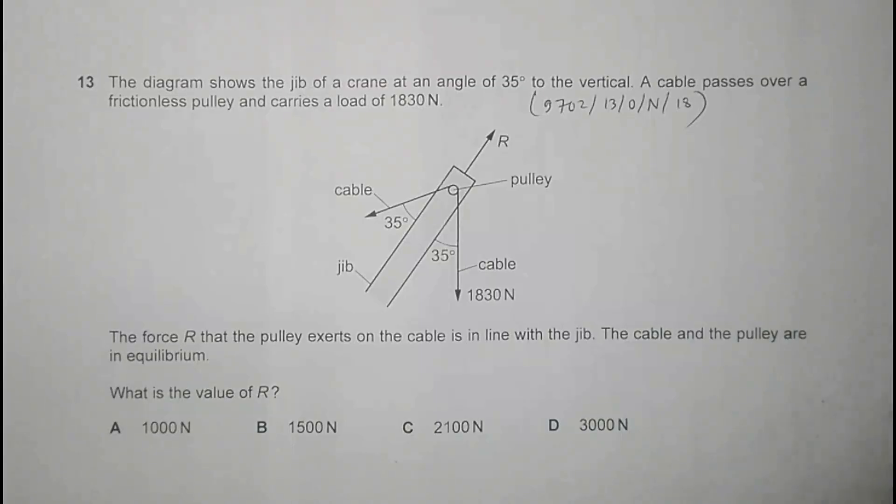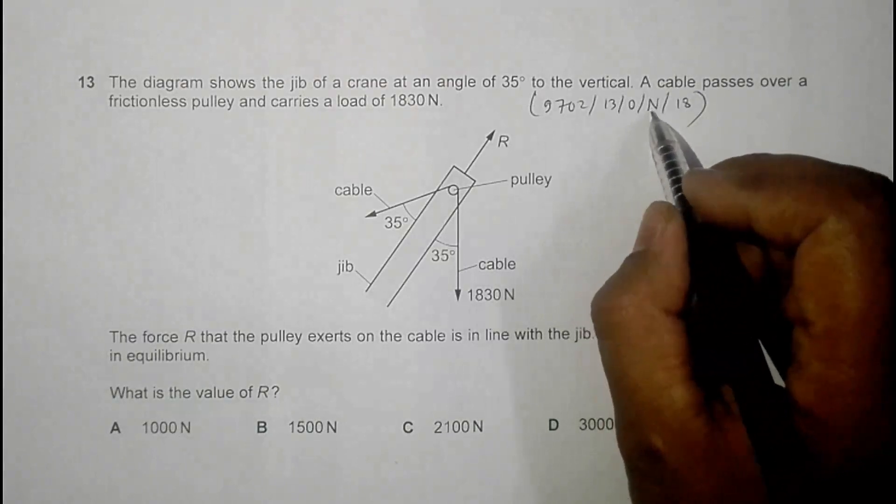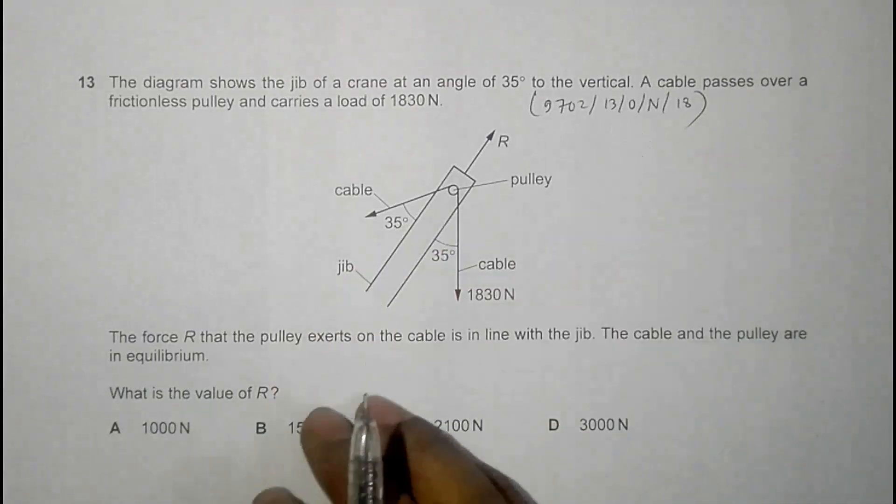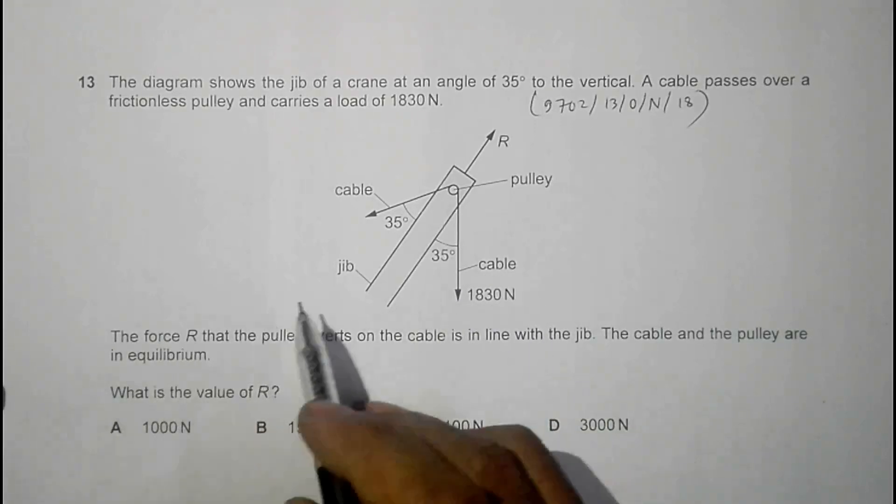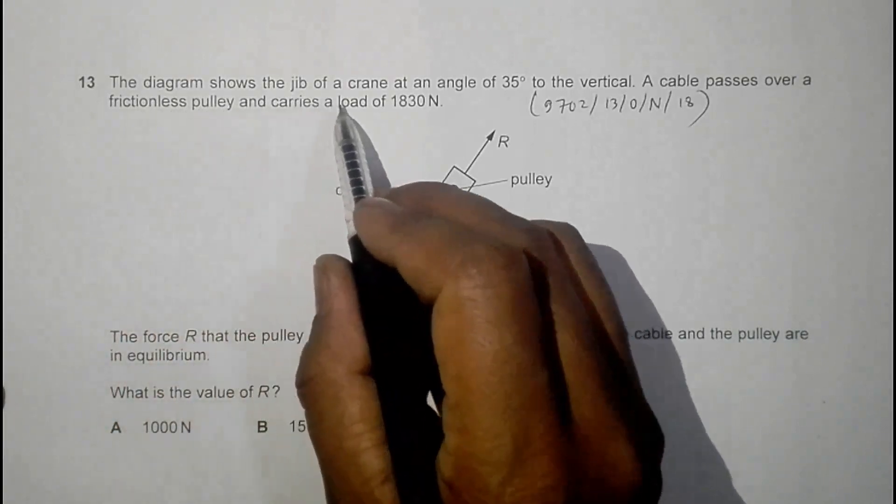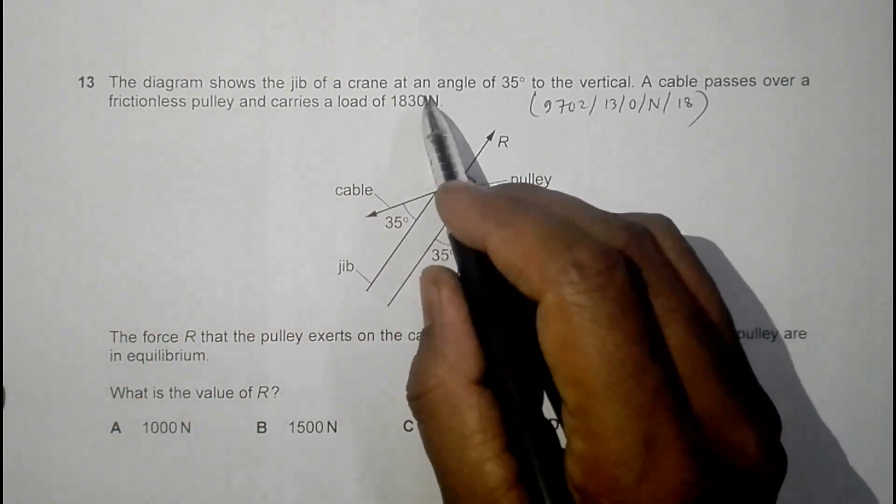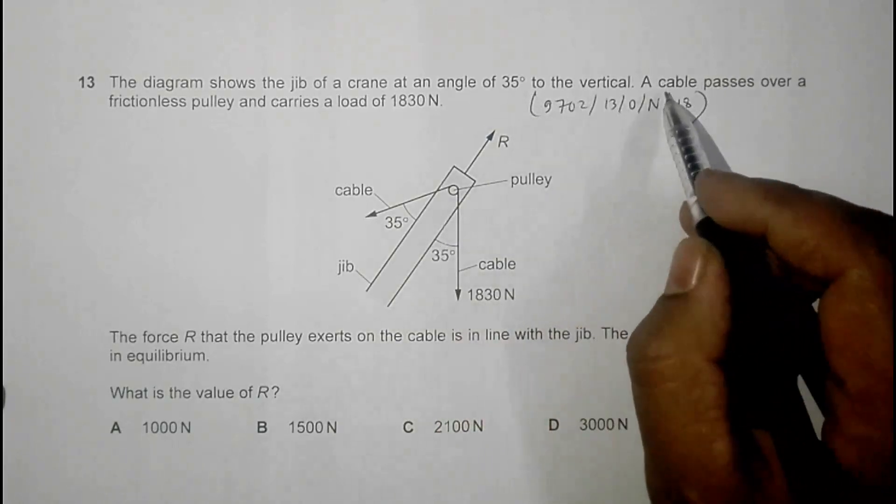Hello folks, again we have a 2018 question from the October November paper 13, and the question number is 13. This is about forces; vectors are also involved here. The diagram shows the jib of a crane at an angle of 35 degrees to the vertical.